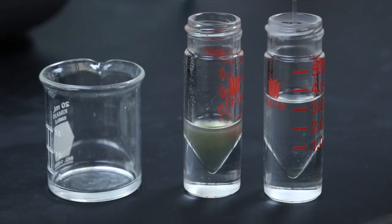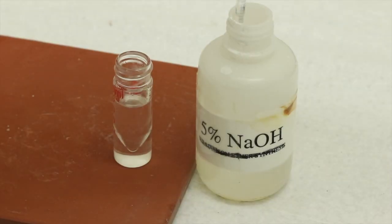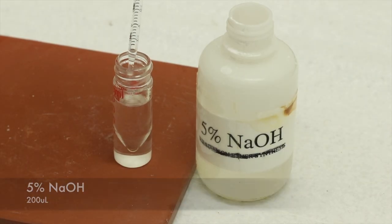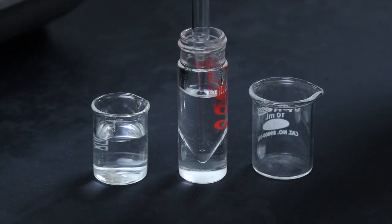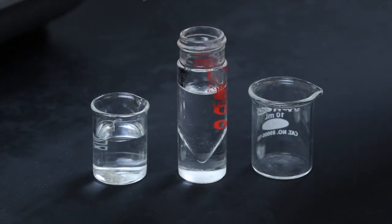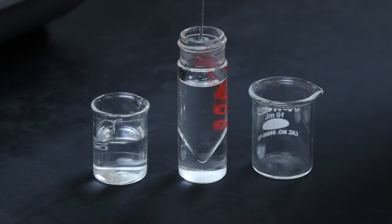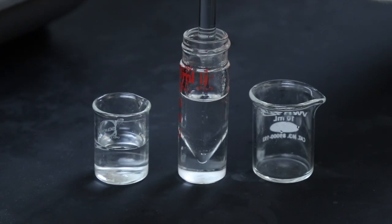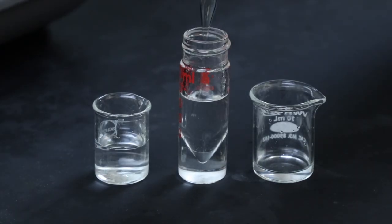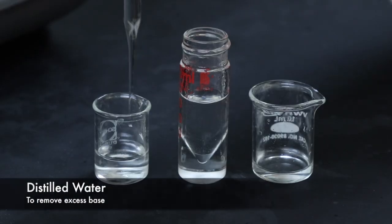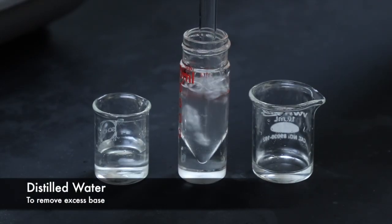Once the extractions are completed, I'll rinse the extracts with some sodium hydroxide to help remove any unreacted phenol that might be left over, and I'll mix those two layers together really well to allow the base to interact with everything, and then I added a little bit of distilled water just to distinguish the two phases a little bit better. Then I can remove the basic phase, and rinse the organic extracts with a little bit more distilled water to remove any excess base that might have been left over.